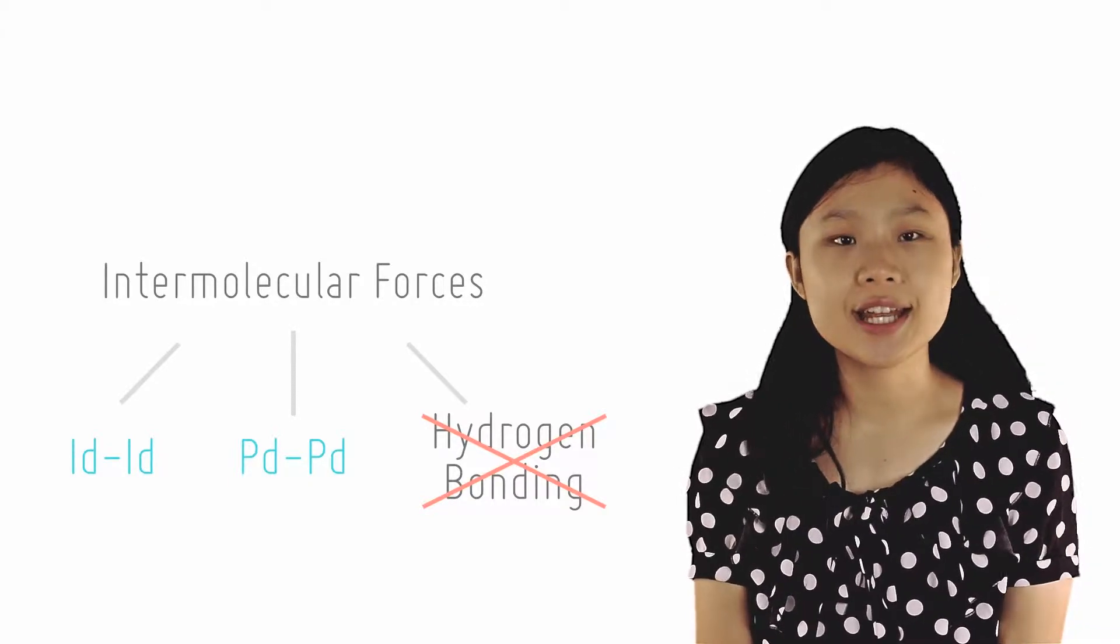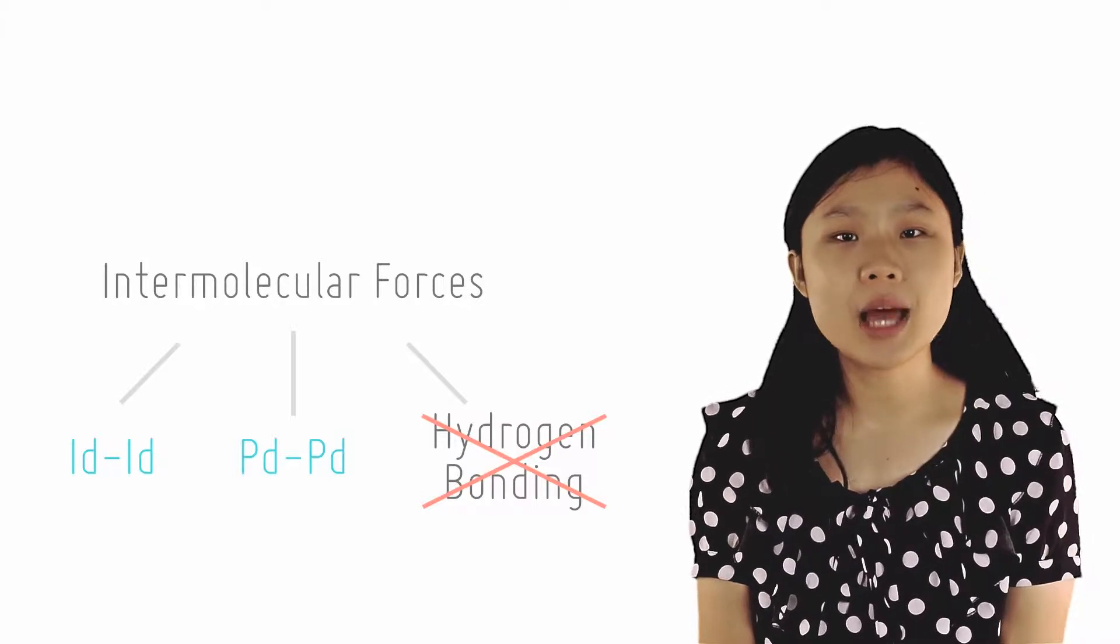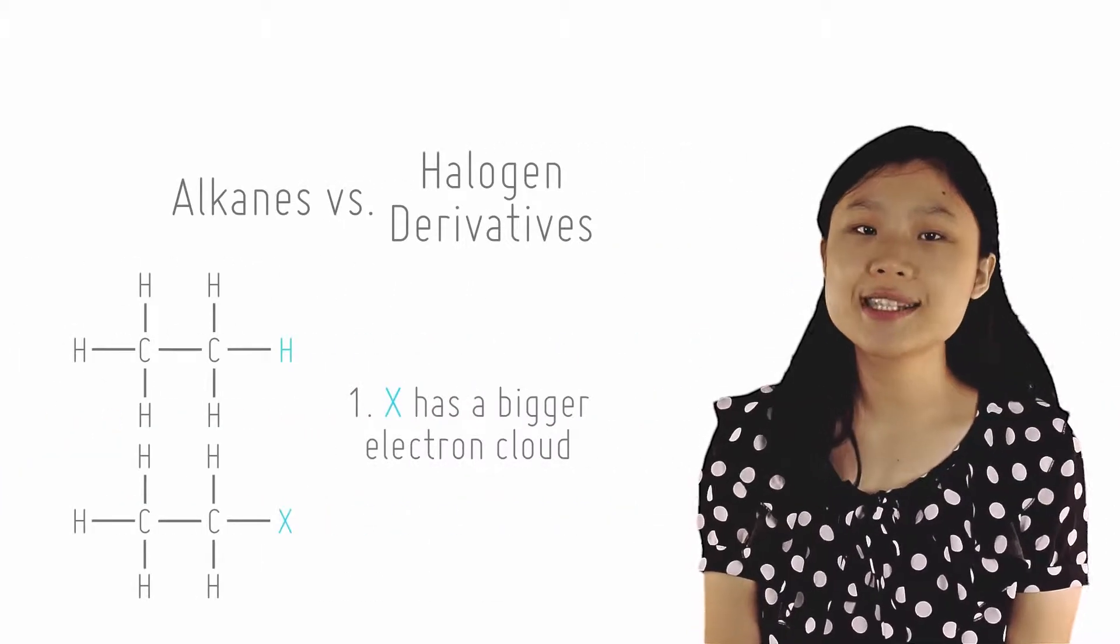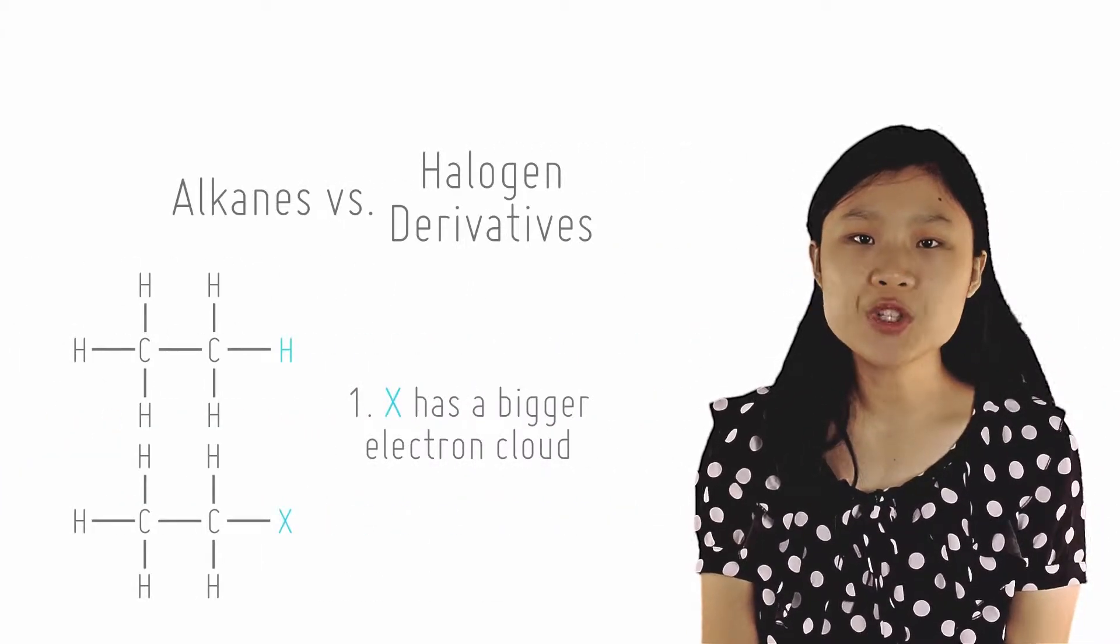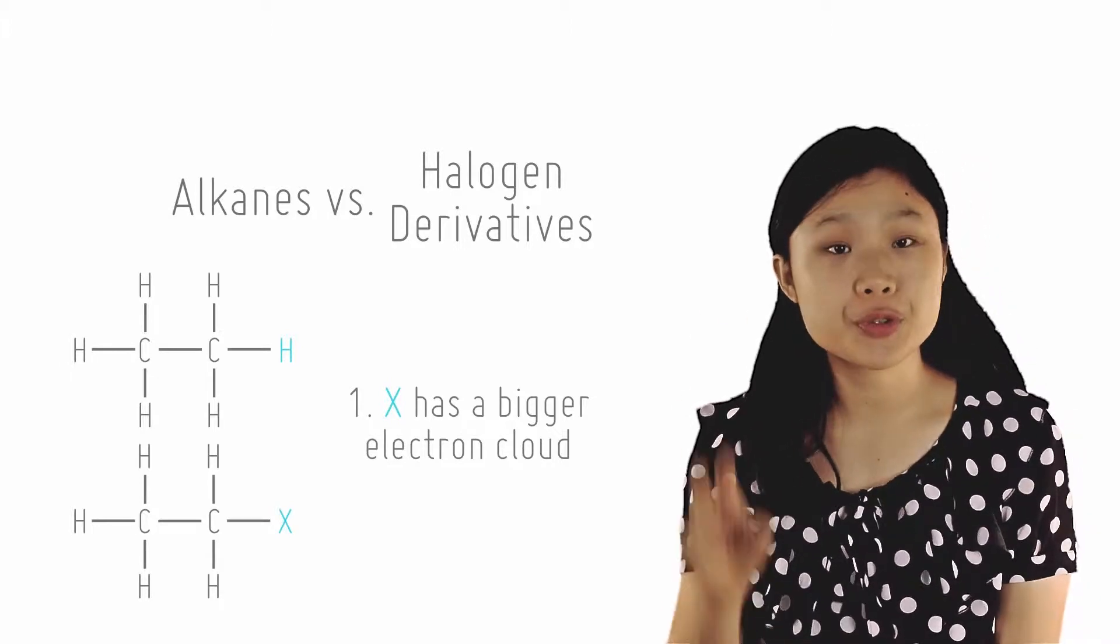Comparing the alkane and the halogen alkane with the same carbon chain length containing the same number of carbons, the halogen alkane will have a higher boiling point for two major reasons.